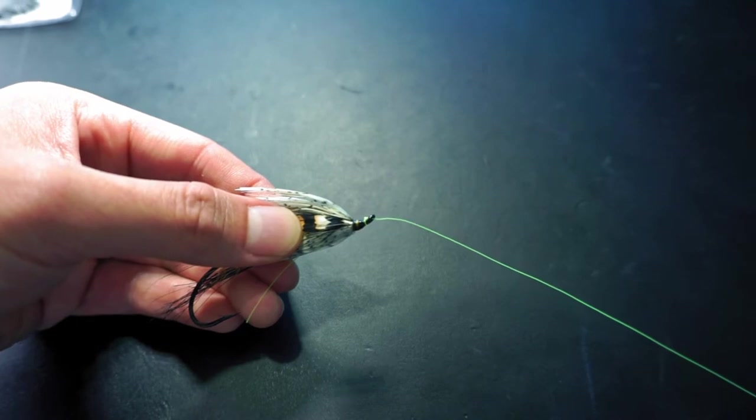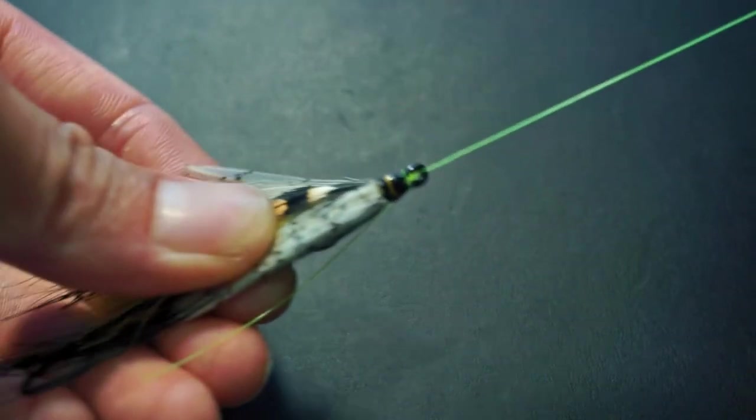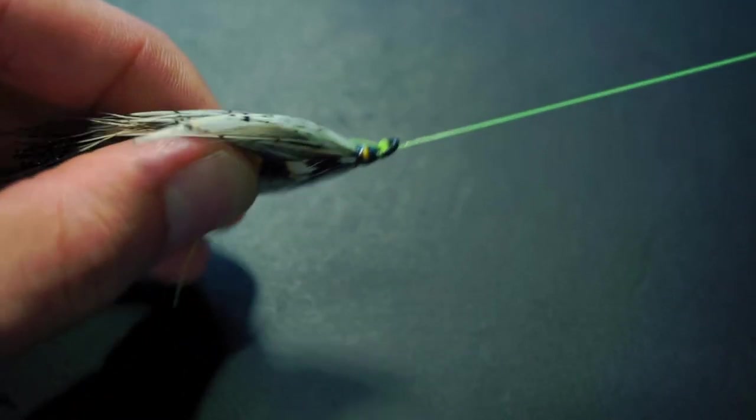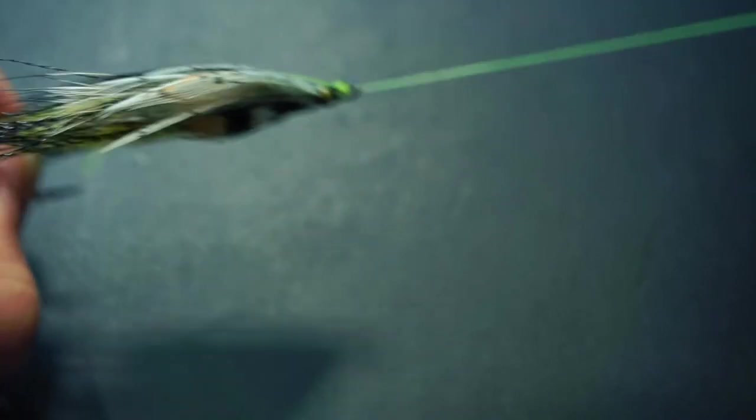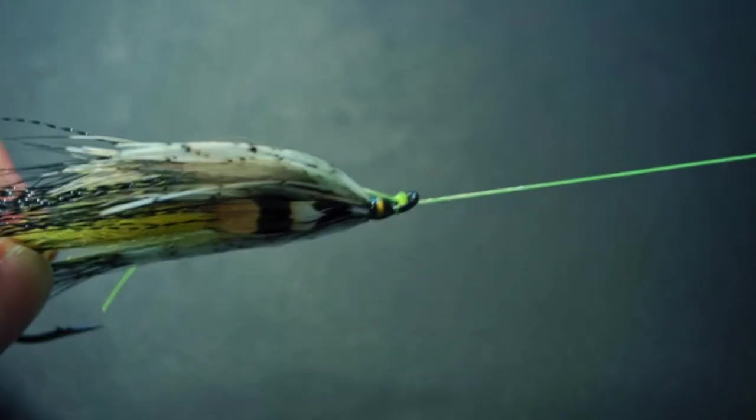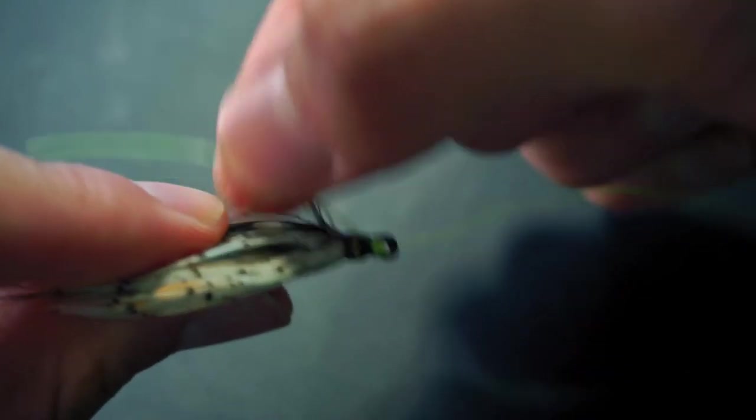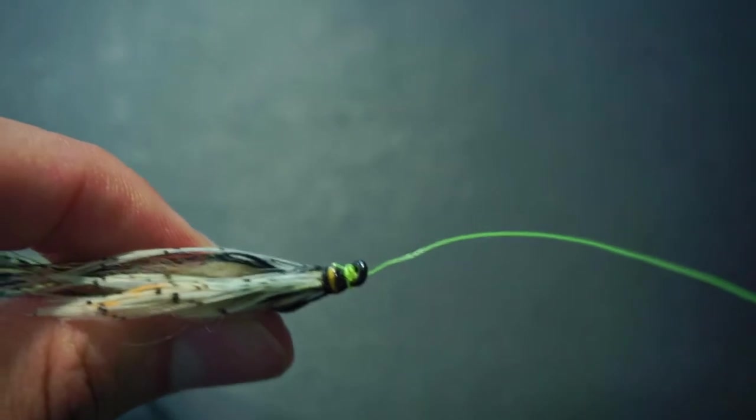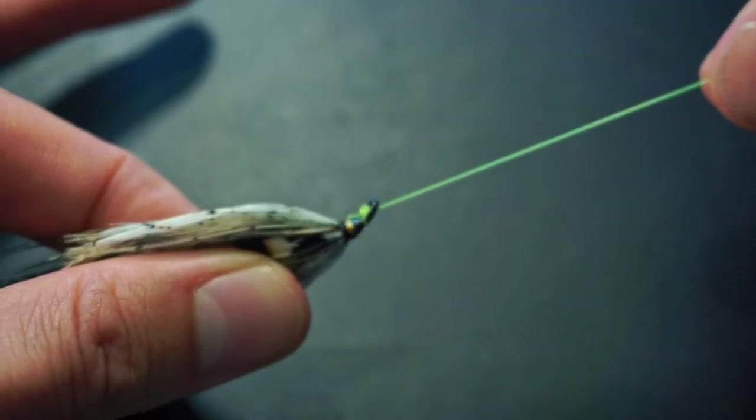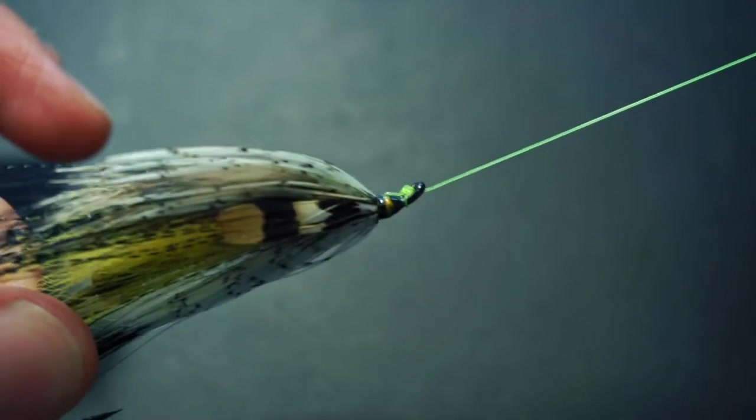I'm going to zoom in here so you can see, like so, very straight. And that's going to make sure that your fly fishes right in the water. Before you finish and throw the fly in the water, you can just cut the tag end, and there you have it. Good working turtle knot.